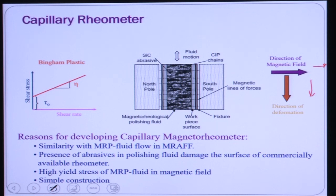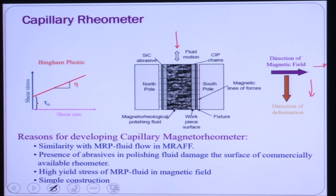The CIP chain structures form horizontally, and the fluid flows in the vertical direction. The reasons for developing the capillary magnetorheometer include its similarity with MRP fluid flow in MRF, the fact that abrasives in the polishing fluid damage the surfaces of commercial rheometers, and the high yield stress of MRP fluid in a magnetic field.